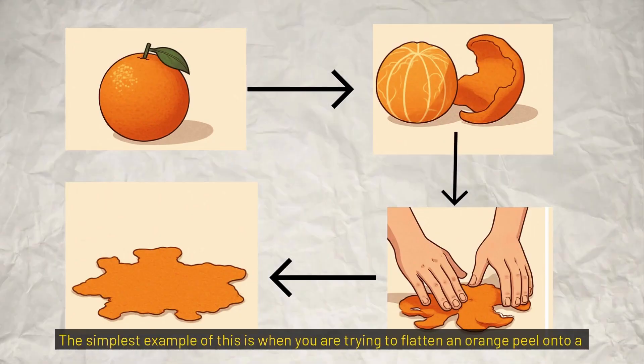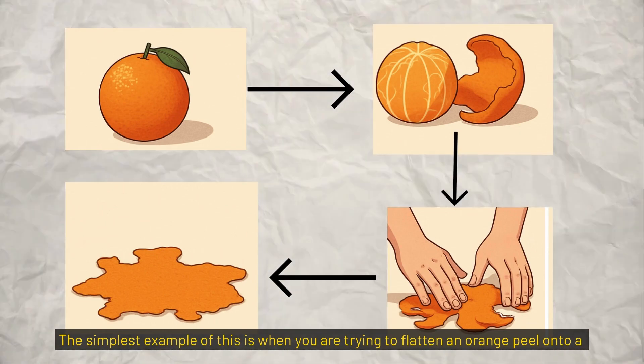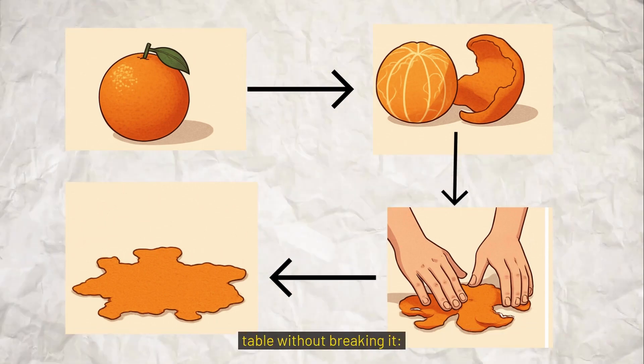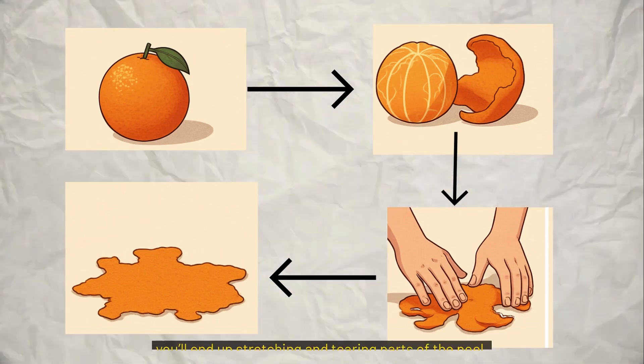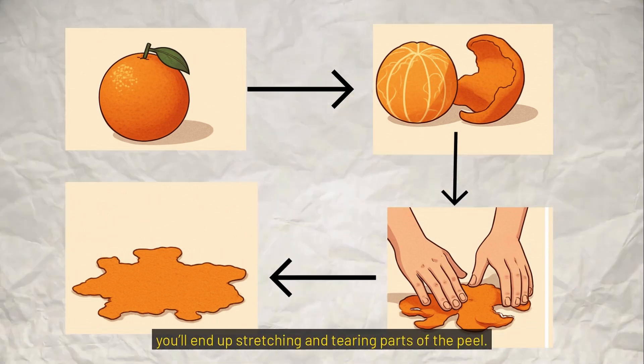The simplest example of this is when you're trying to flatten an orange peel onto a table without breaking it — you'll end up stretching or tearing parts of the peel.